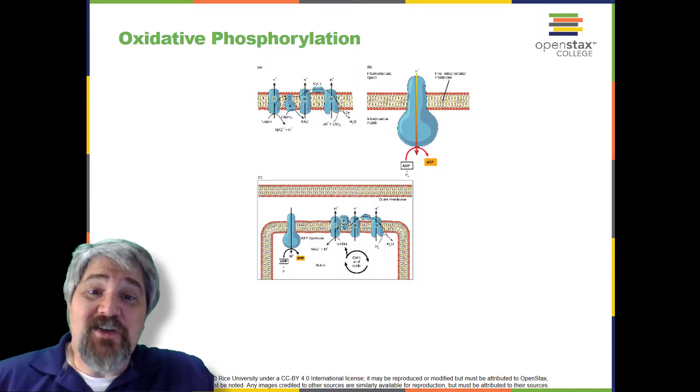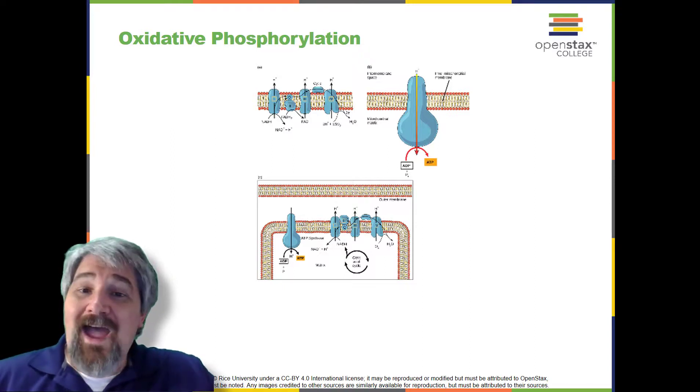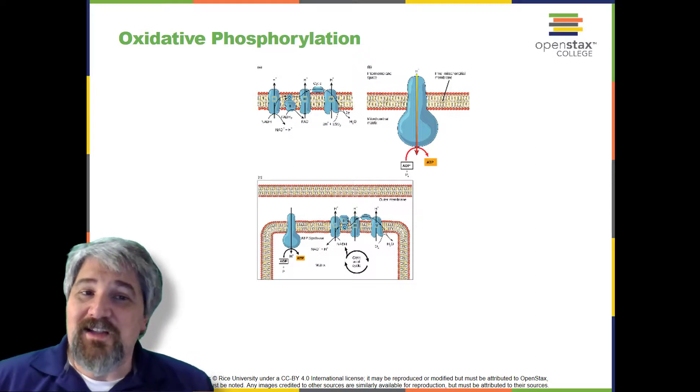Most of the ATP generated during the aerobic catabolism of glucose, however, is not generated directly from these pathways. Rather, it derives from a process that begins with passing electrons through a series of chemical reactions to a final electron acceptor, oxygen.